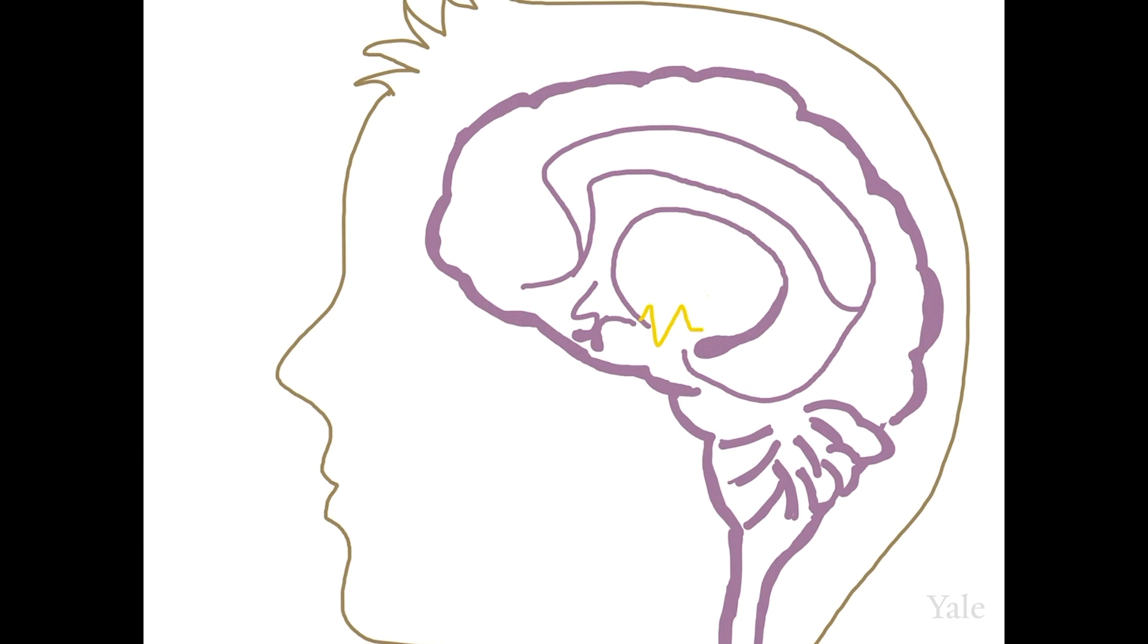When you detect a potential threat, the amygdala sends a neural signal to the hypothalamus, which then releases a hormone called corticotropin releasing factor. Corticotropin releasing factor then triggers the release of the stress hormone ACTH from the pituitary gland.